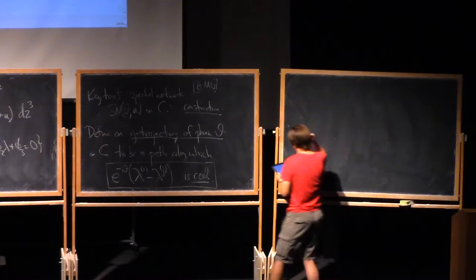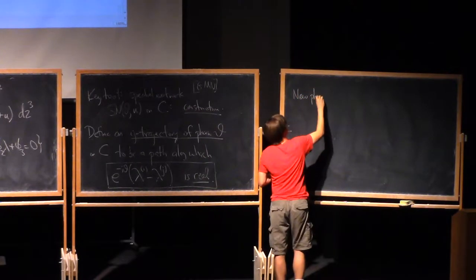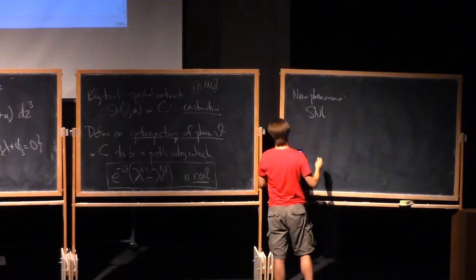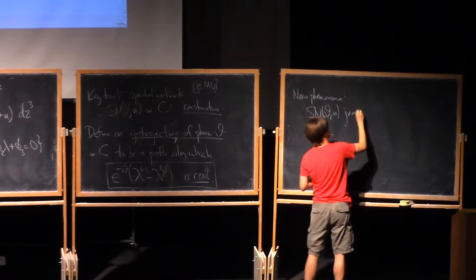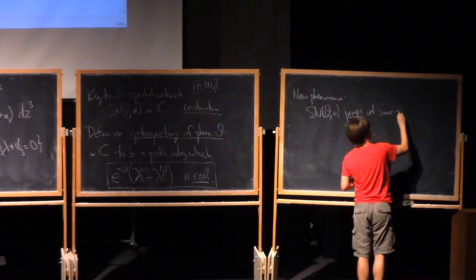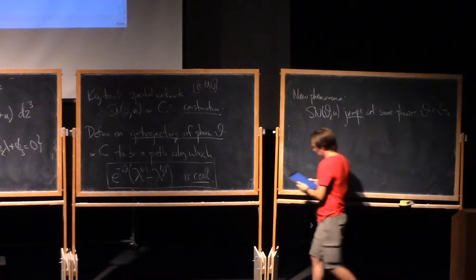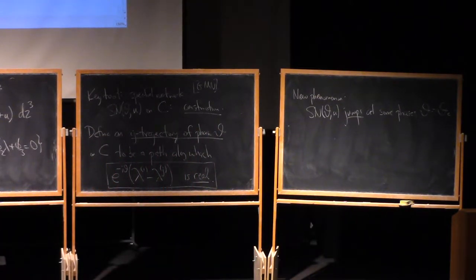Now, as I've alluded to, there's a new phenomenon that occurs here that didn't occur in the sort of pure two-dimensional examples that we talked about before, which is that Sn of theta and U jumps at some critical phases. Theta equals theta critical. So let me go back to the sort of simplest example of that.